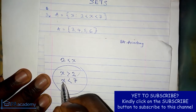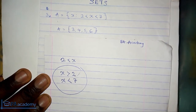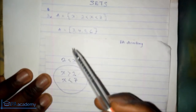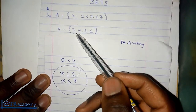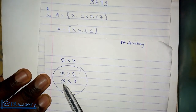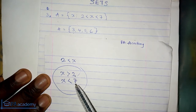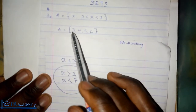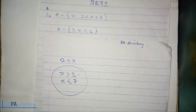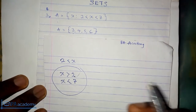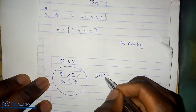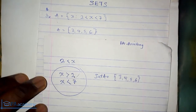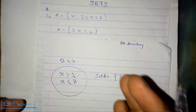So if X is greater than 2 and X is less than 7, the elements of set A are 3, 4, 5, 6. We start from 3 because X is greater than 2, so the next number after 2 is 3. And the last value is 6 because X is less than 7, and the number before 7 is 6. Sometimes questions won't write out the elements directly — they'll give you this kind of notation that might look confusing, and it's one of the common ways they present it.